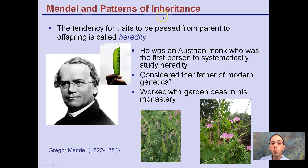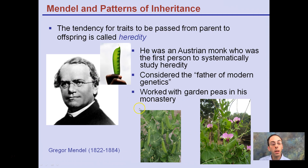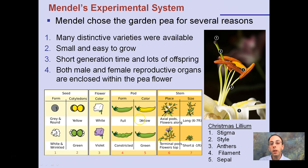Mendel's patterns of inheritance — the tendency for traits to be passed from parent to offspring is called heredity, and that's the main topic here. He was an Austrian monk who was the first person to really study this and is considered the father of modern genetics. He worked with garden peas in his monastery, and he lived from 1822 to 1884.